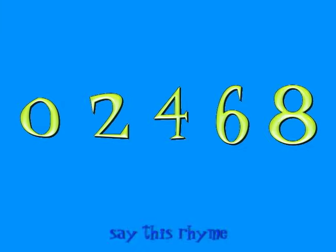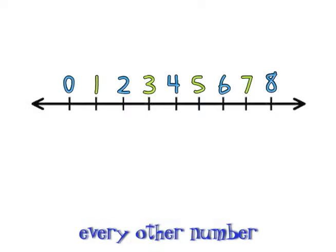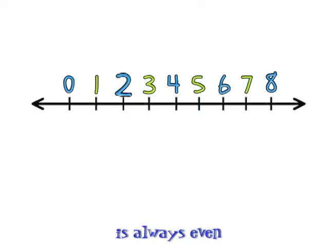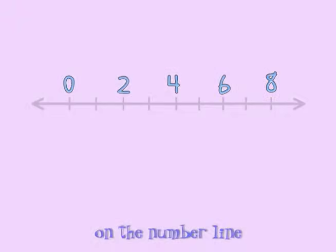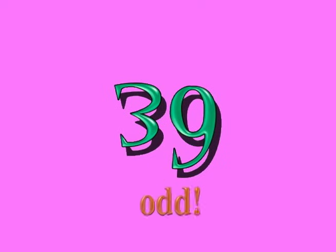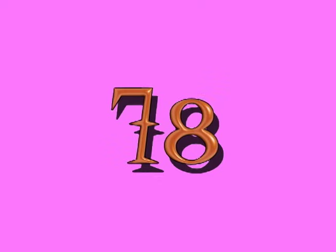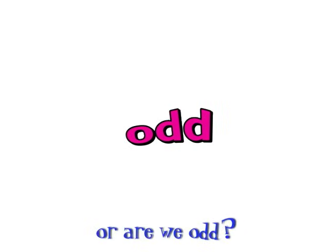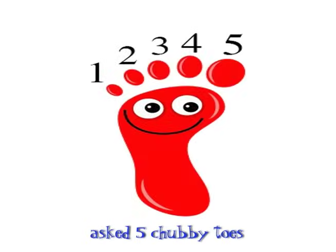Even numbers split right down the middle. Half and half make even numbers every time. 0, 2, 4, 6, 8. Say this rhyme: every other number is always even, every other number on the number line. 100 — Even. 97... 62 — Even. 39... 86 — Even. 54 — Even. 32 — Even. 78 — Even.